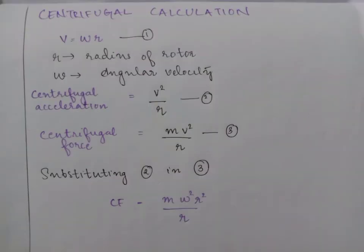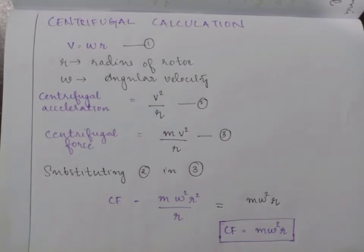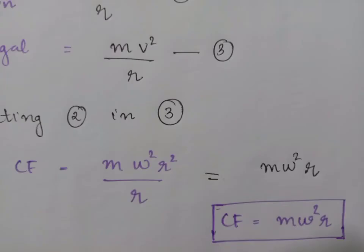Next, we substitute equation 2 in 3. We substitute v equals omega r, then you will get the centrifugal force equals m omega squared r squared by r. Arranging the equation, you get the centrifugal force equal to m omega squared r as the standard equation.